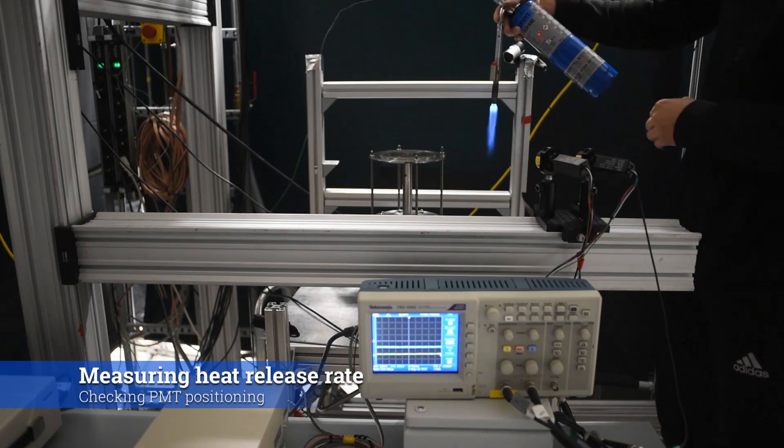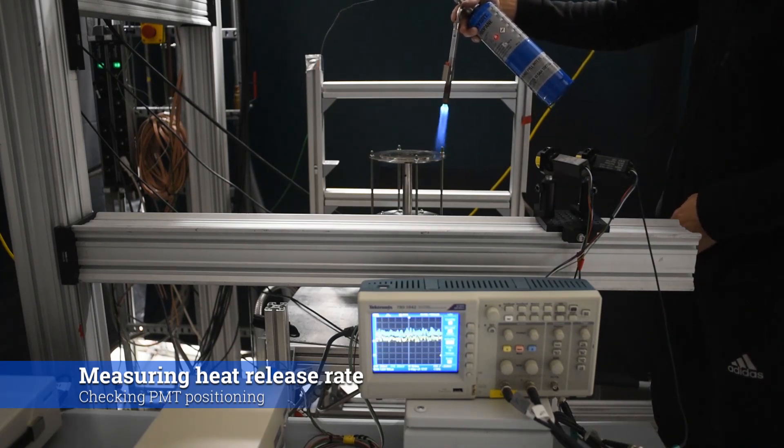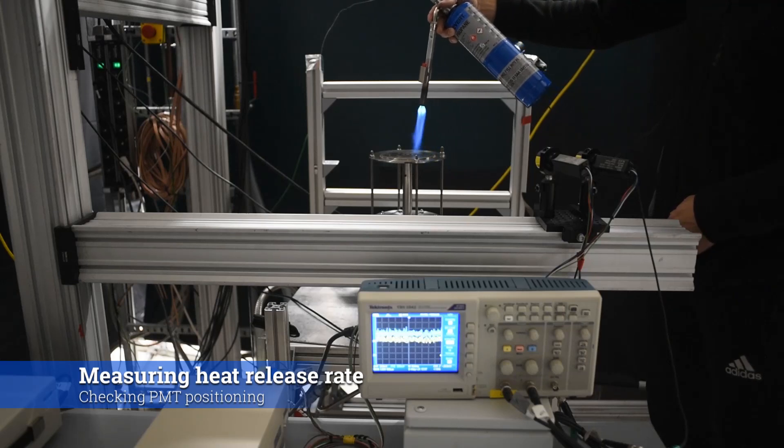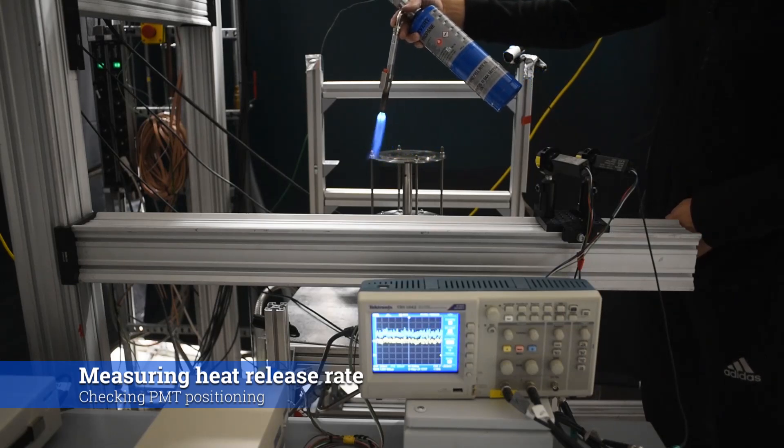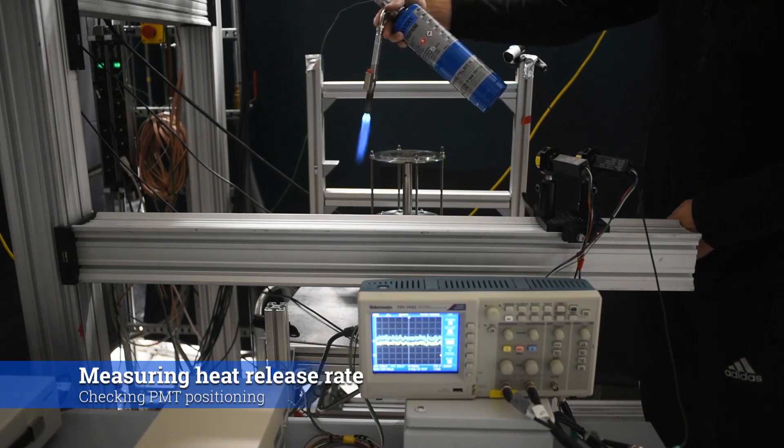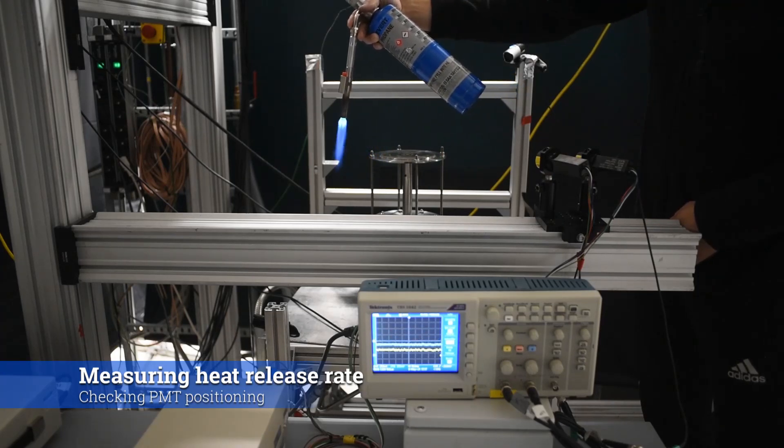Here we see a propane blowtorch being moved through the region of interest, with the PMT output displayed on an oscilloscope. LEDs are also useful for this purpose and can be mounted on a traverse to more accurately measure the PMT response to light emitted from different locations.